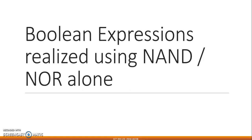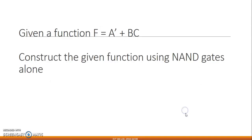Good day everybody. Today we are going to study boolean expressions that are realized using either NAND gates alone or NOR gates alone. It is one of those methods that are so easy that you end up wishing this question would come for the exam. If you are given a function, let's go straight into the NAND gates operation — that is f = a̅ + bc.